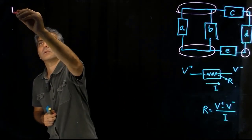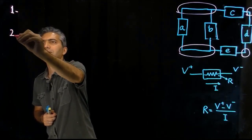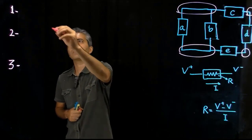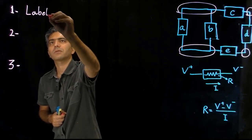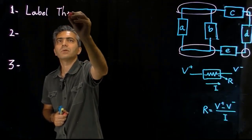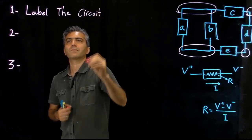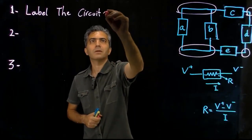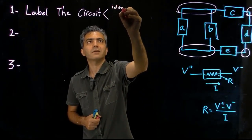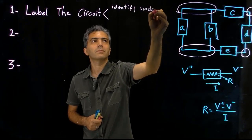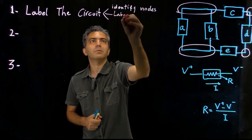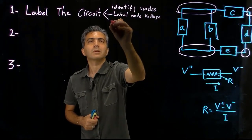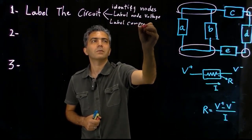So listen carefully. The process — I break it down into three steps. First, and sometimes I think this is the most important step: you're going to label the circuit. What I mean by labeling the circuit is that you have to identify nodes, label node voltages, and label component currents.